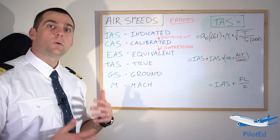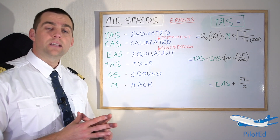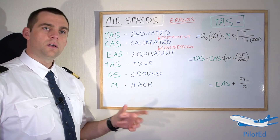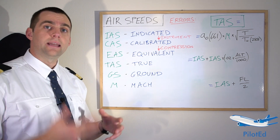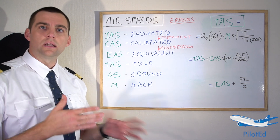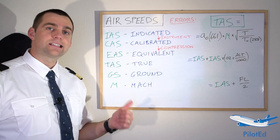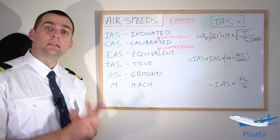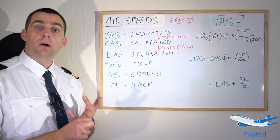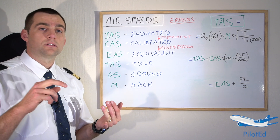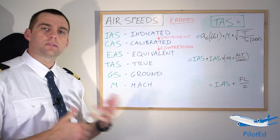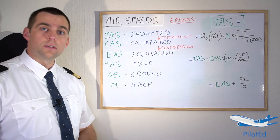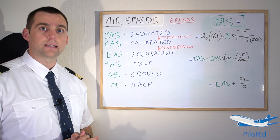True airspeed is the one we're normally trying to calculate. It's relative to the atmosphere — relative to the mass of air that we're flying in. The true airspeed and heading constitute the velocity relative to the atmosphere. TAS is what we use for performance; it's the speed indicated in the flight manuals. The pilot reports we make are generally in TAS, and it's what we use for flight plans. So this is the one we need to calculate.